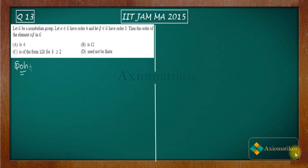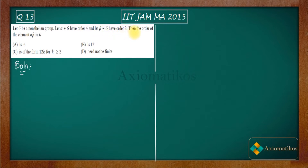Hello dear students, welcome to Exeomaticos. This video is part of the solution series for IIT JAM 2015. We are here with Problem 13, which is an abstract algebra problem. Let G be a non-abelian group, alpha belongs to G with order 4, and beta belongs to G with order 3. The question asks for the order of the element alpha beta in G.